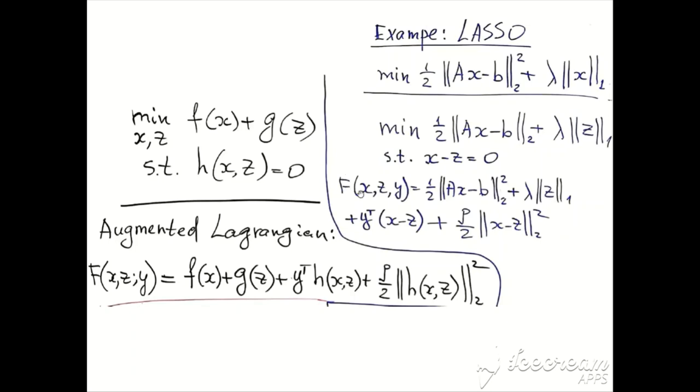Then our augmented Lagrangian may be written as F of X, which is like here in the general form, plus G of Z, which will be the L1 norm of Z written here, plus y transpose multiplied by the vector of constraints X minus Z, thus penalized by the squared 2-norm of constraints.